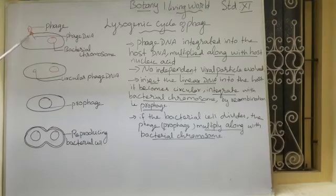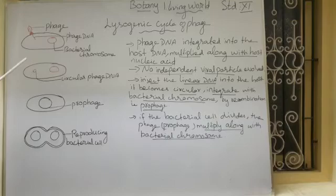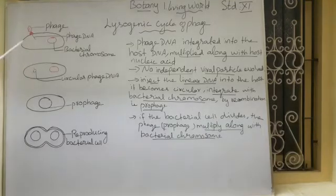Look at the diagram. First, it will inject the linear DNA into the host. Then it will become circular — first it becomes the linear form, then circular.